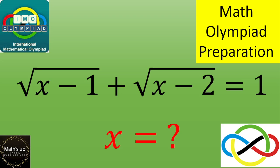Hello and welcome. In this video, for this math olympiad exercise, you want to find the value or values of X such that the square root of (X minus 1) plus the square root of (X minus 2) equals 1. If you want to give it a try, please pause the video; otherwise, let's see the solution.